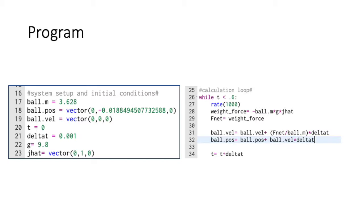Next, we created a calculation loop. Here, we used Newton's second law to calculate the net force on our object and then updated the position of our ball with that velocity. We then moved our time step forward by delta T seconds. As you can see in our calculation loop, the only thing acting upon our net force is our weight force, which is equivalent to negative m times g times j hat.